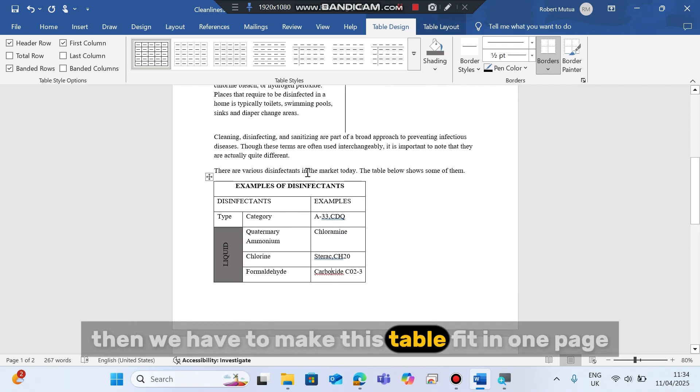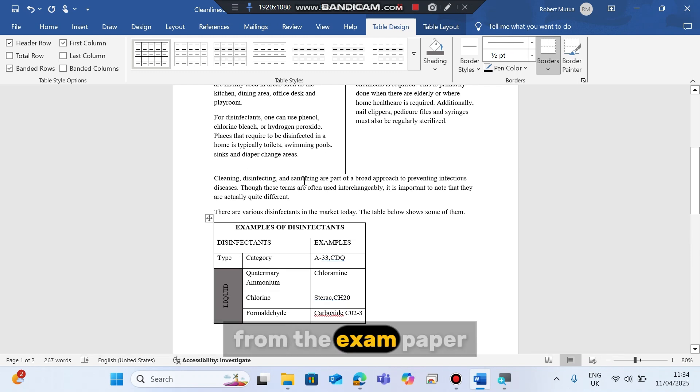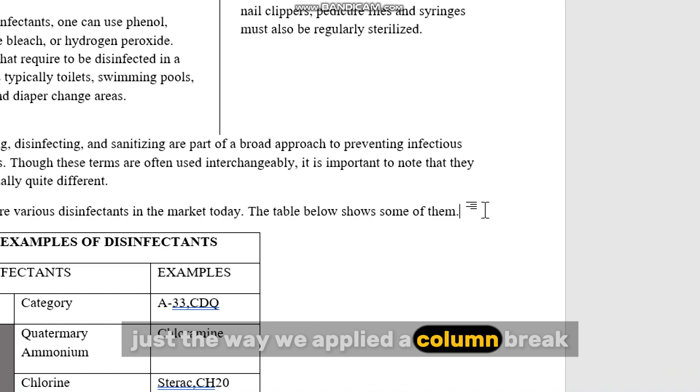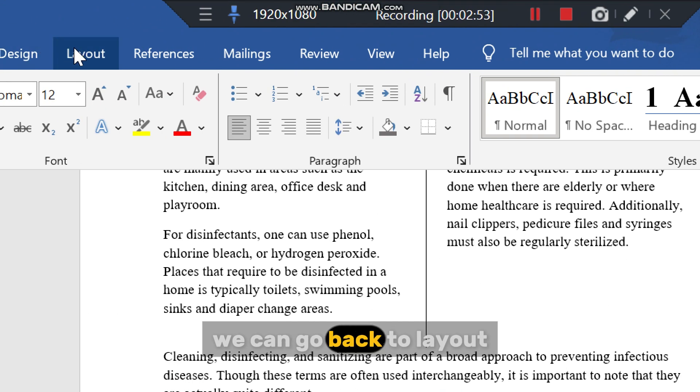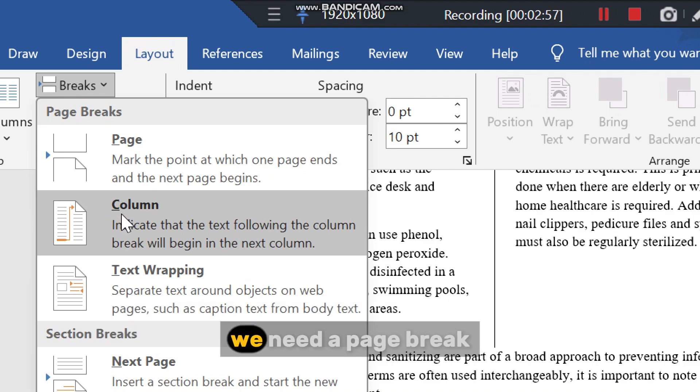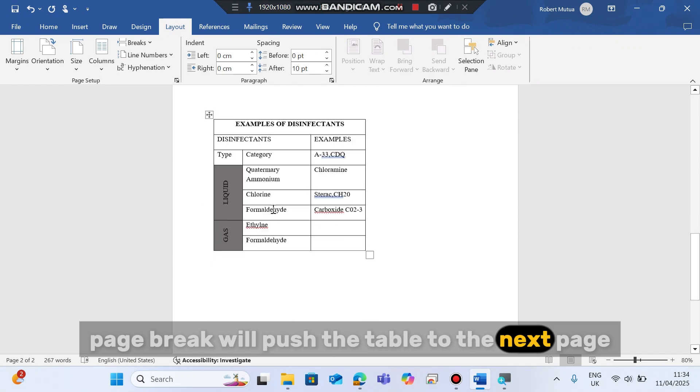Then we have to make this table fit in one page. From the exam paper we can see that the table is in the next page, so we can push it to the next page. Just the way we applied a column break, we can go back to layout, go to breaks, but now we don't need a column break, we need a page break. The page break will push the table to the next page.